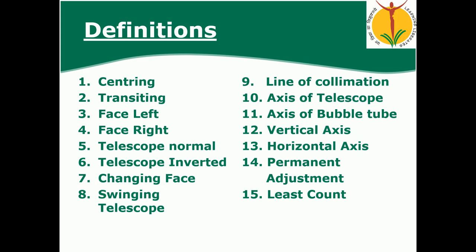Before starting with the theodolite, we have to know certain technical terms. First is centering — the process of placing the instrument exactly over the station is called centering. Centering is done with the help of a plumb bob and optical plummet of the theodolite. Centering is required because when measuring the horizontal angle from one station, we have to transfer that ground point to exactly the center of the instrument.